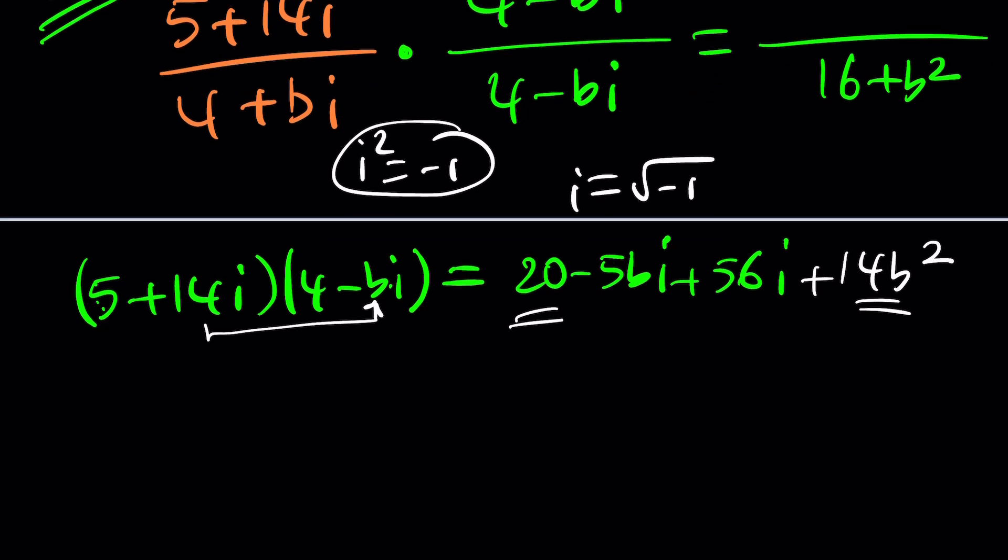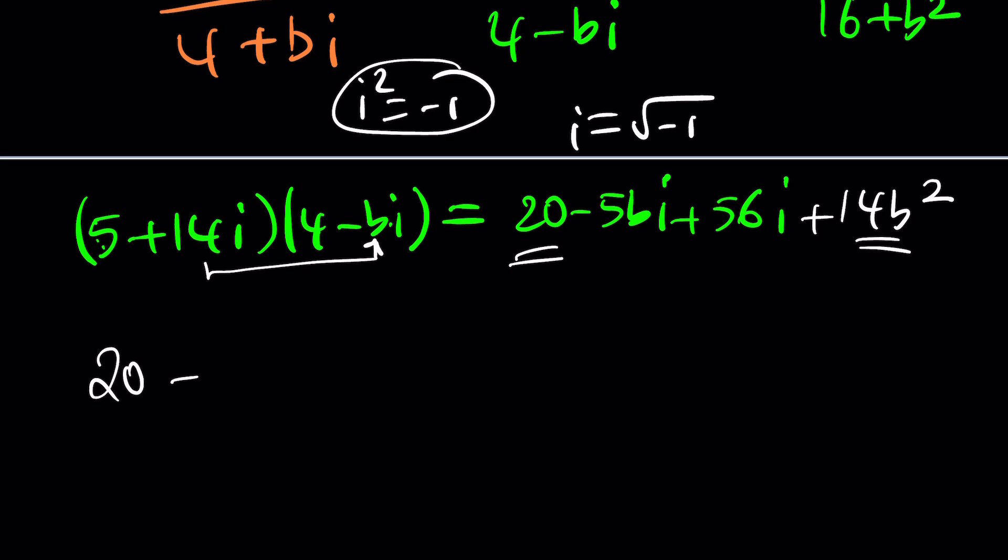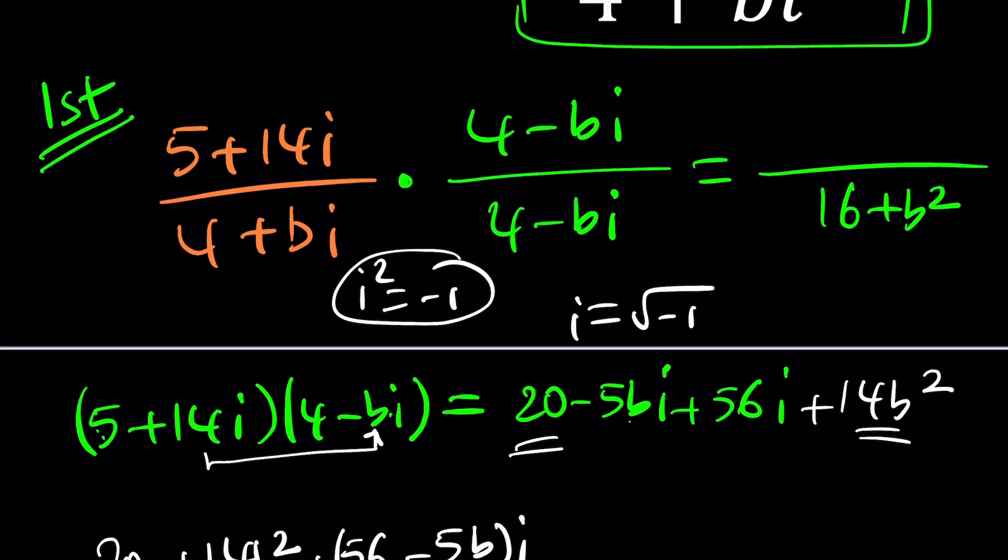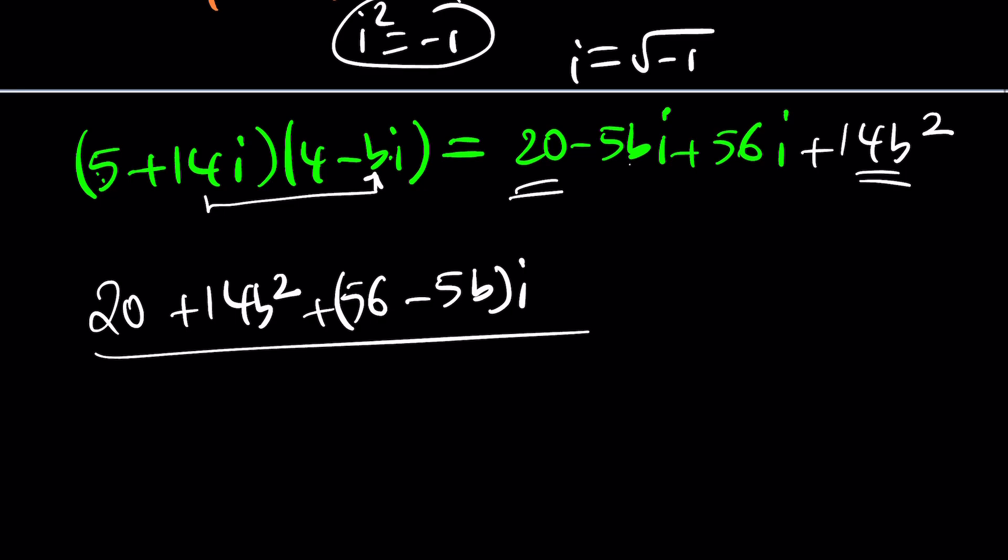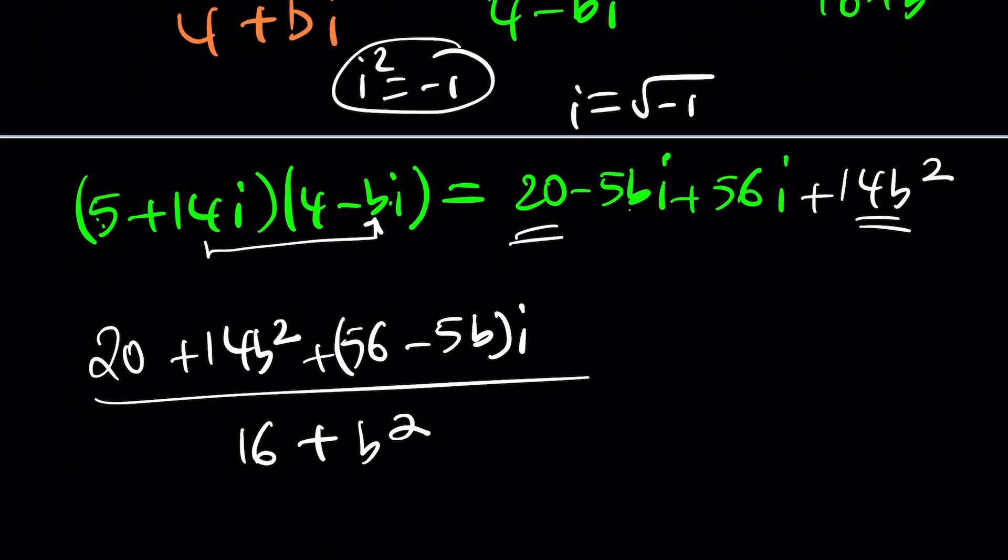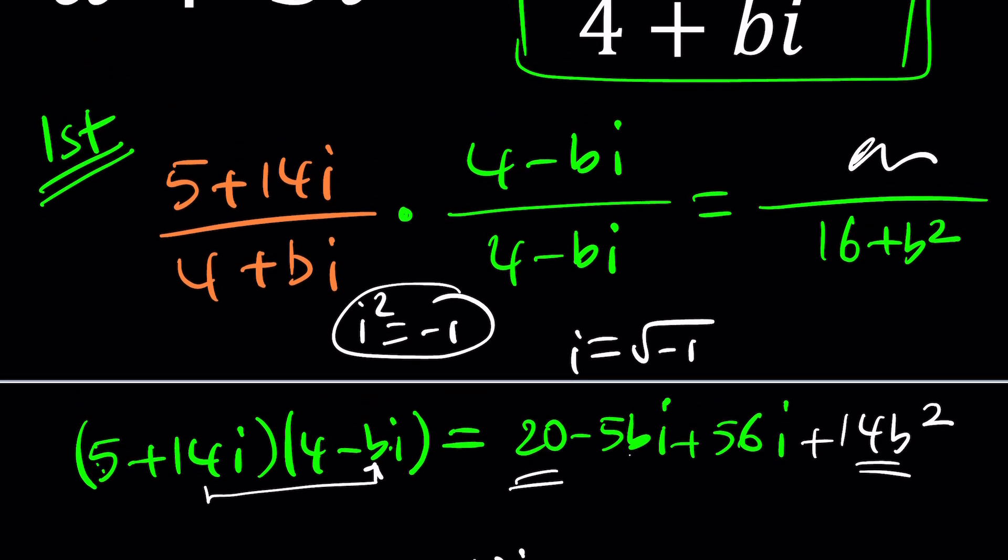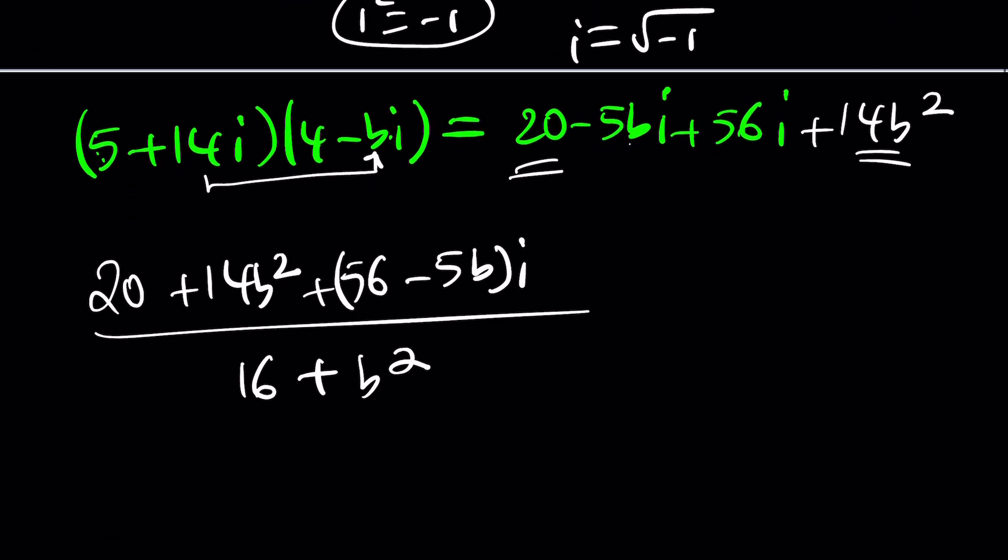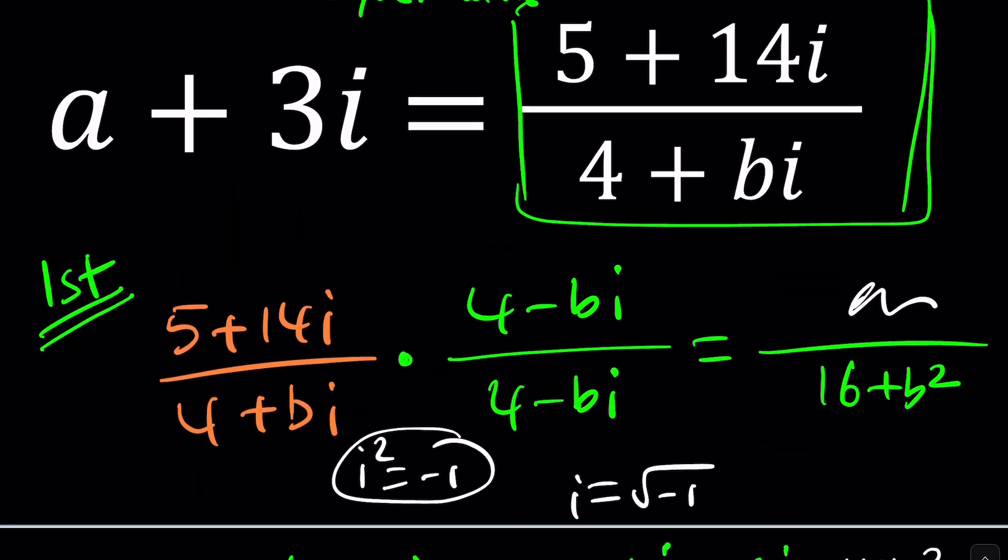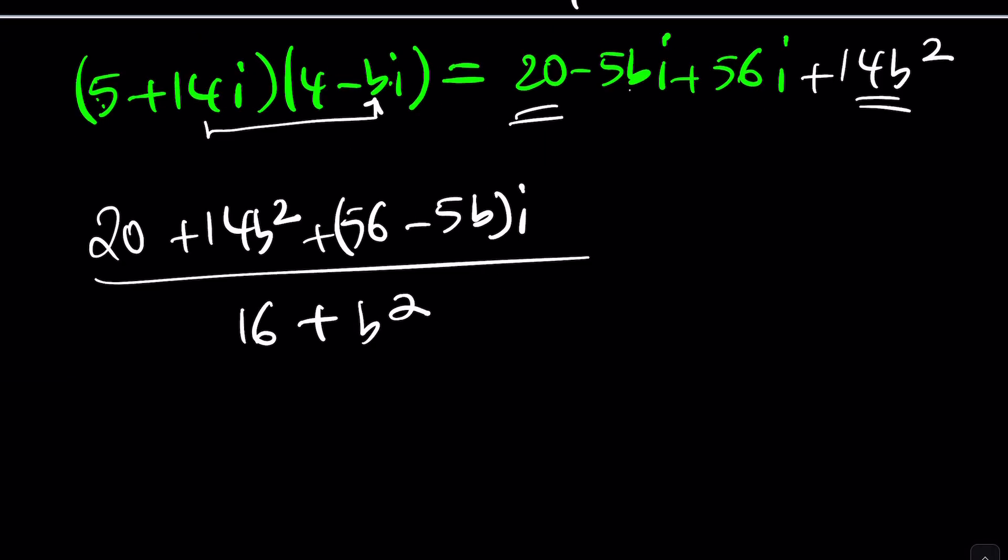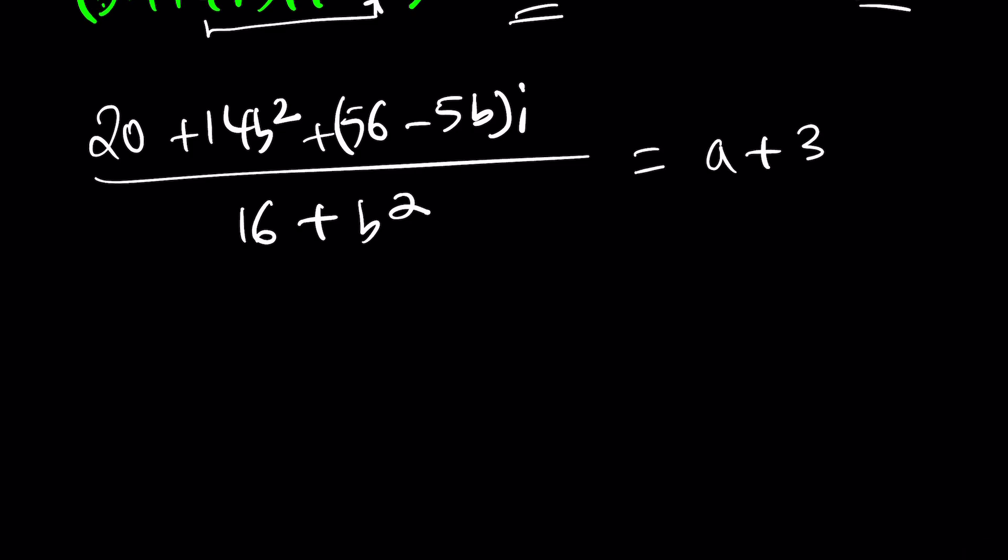So here we get negative 14bi squared, but i squared is negative 1, so that becomes plus 14b. Nice. We're going to bring together the real parts: 20 plus 14b. And this is going to be 56 minus 5b, and that'll be the imaginary part. Divided by 16 plus b squared. It is equal to a plus 3i.